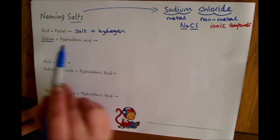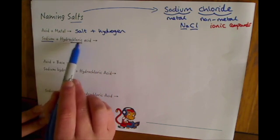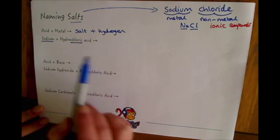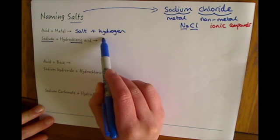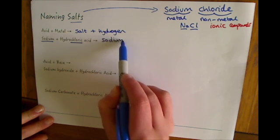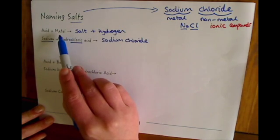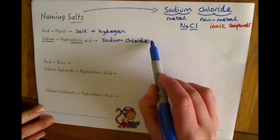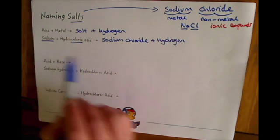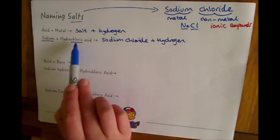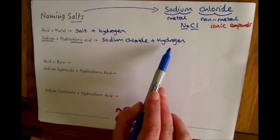So in this example we've got sodium plus hydrochloric acid. The first word is from the metal that we use, so sodium. And the second word is from the acid, hydrochloric acid. So we make sodium chloride and hydrogen.